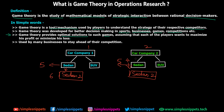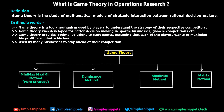This is a scenario where two companies compete by applying different strategies, and this is where game theory comes into the picture — helping to analyze which strategy to use against which player, and how to maximize profit or minimize loss. In game theory we have different methods to solve numericals: the minimax or maximin method, also known as pure strategy; the dominance method; the algebraic method; and the matrix method. We'll go through each method in further videos and solve numericals based on them.